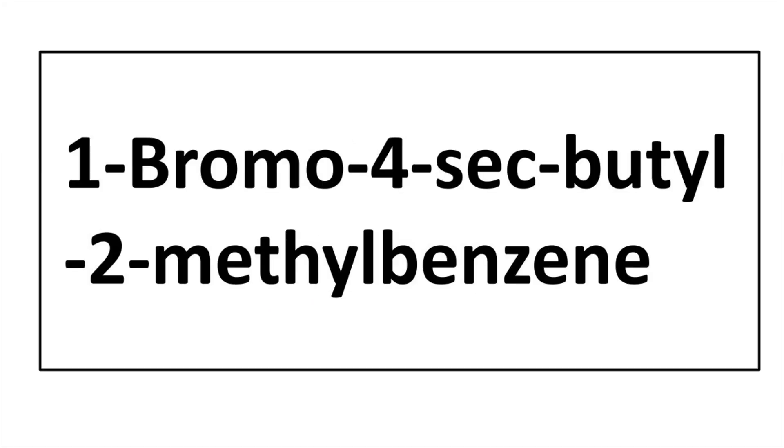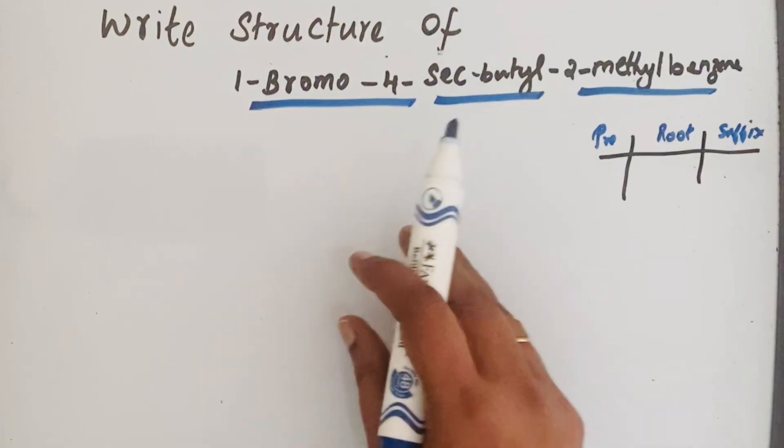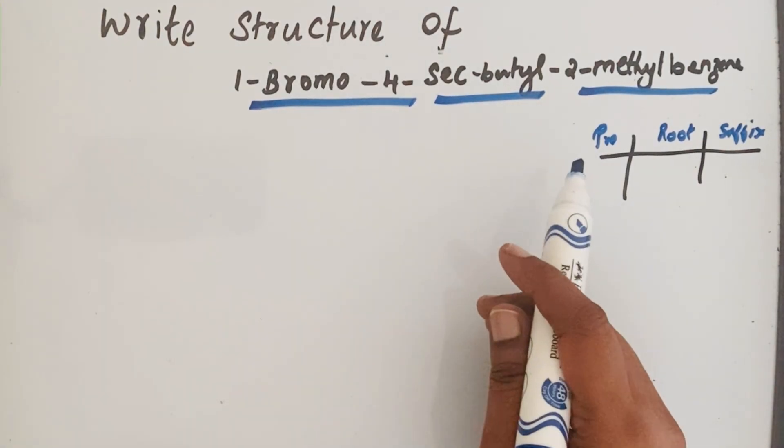Welcome to Aurora Chemistry for everyone. Let's see how to draw the structure of 1-bromo-4-sec-butyl-2-methylbenzene. To write the structure from the IUPAC name, we always remember to draw that format which contains root, prefix, and suffix. First, if you fill this format, then drawing the structure is very easy.